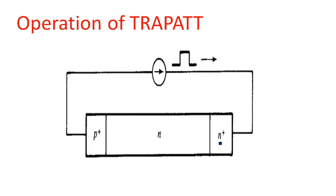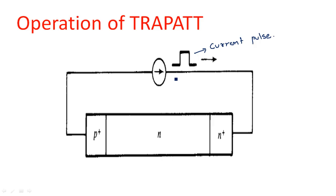The TRAPATT diode has two configurations: p+nn+ or n+pp+. A current pulse is applied as the input — unlike a normal diode where we give a voltage input to make it reverse or forward biased. In the TRAPATT diode we specifically give a current pulse as the input source, and the current flows in the direction shown.